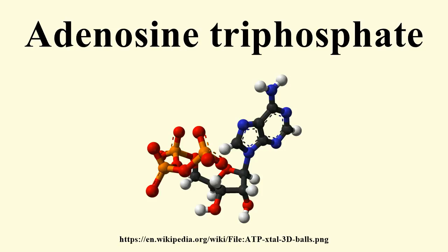A more representative value called the energy charge is increasingly being employed. The values given for the Gibbs free energy for this reaction are dependent on a number of factors, including overall ionic strength and the presence of alkaline earth metal ions such as Mg²⁺ and Ca²⁺. Under typical cellular conditions, ΔG is approximately minus 57 kJ per mole.